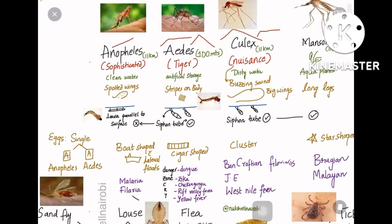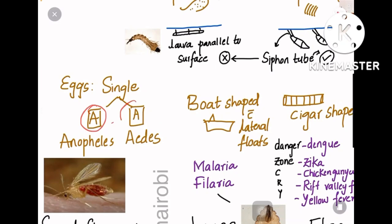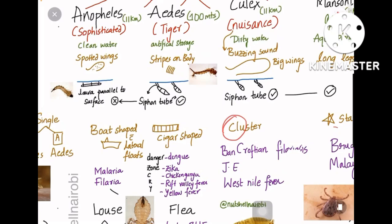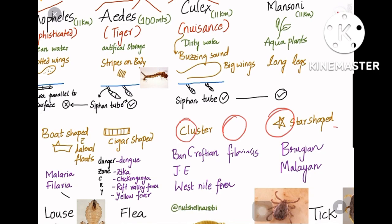Regarding egg-laying: 'A' is the first letter, meaning single — so Anopheles and Aedes lay eggs singly. Culex lays eggs in clusters, and Mansonia lays eggs in a star shape.